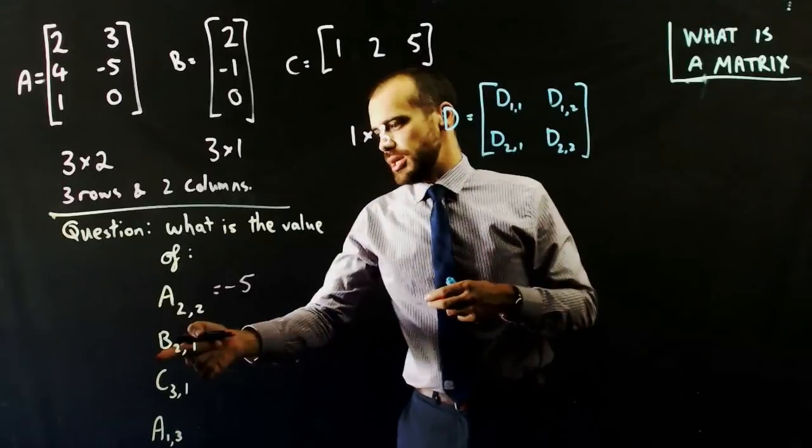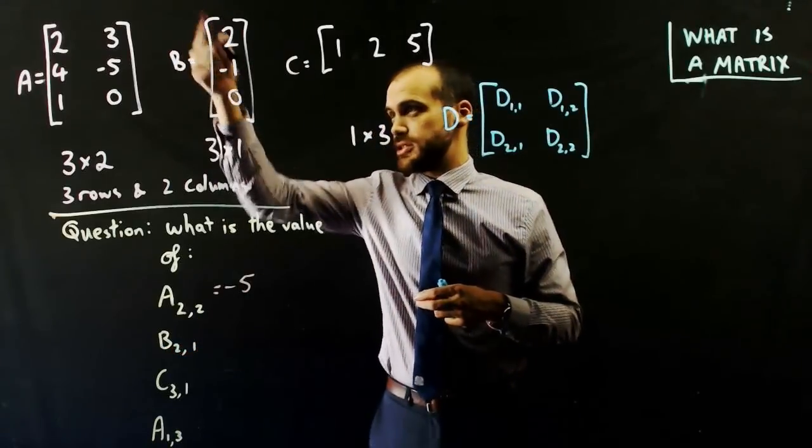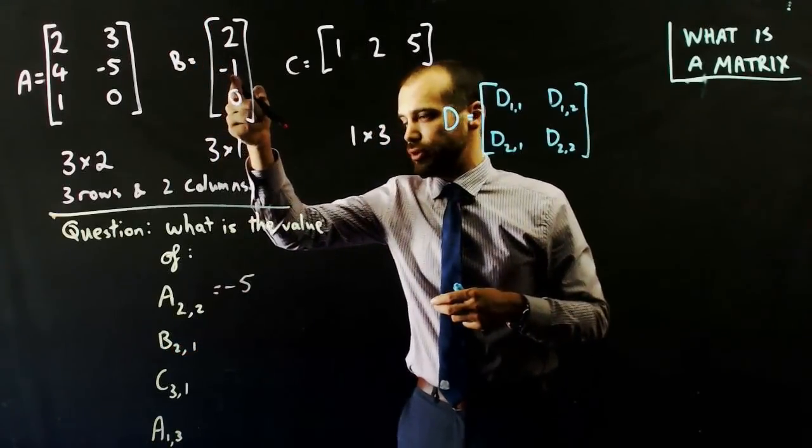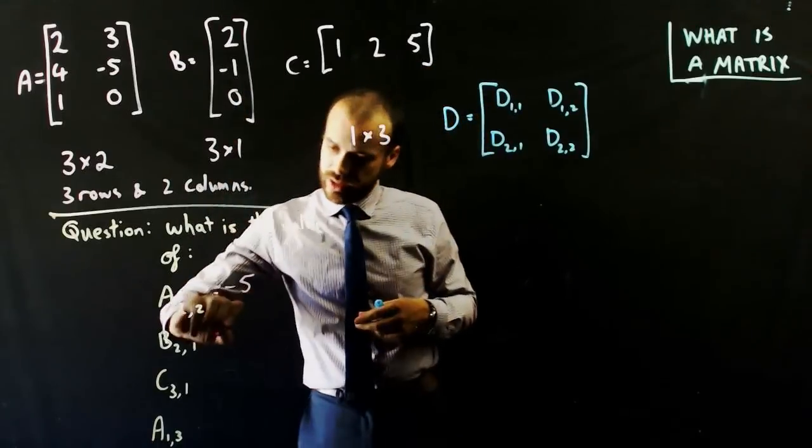What is B2, 1? So that's the second row, the first column. So the answer there is negative 1.